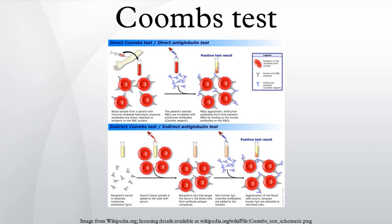Coombs reagent is used in both the direct Coombs test and the indirect Coombs test. Coombs reagent is anti-human globulin. It is made by injecting human globulin into animals, which produce polyclonal antibodies specific for human immunoglobulins and human complement system factors. More specific Coombs reagents or monoclonal antibodies can also be used.